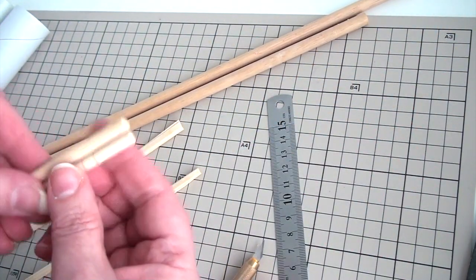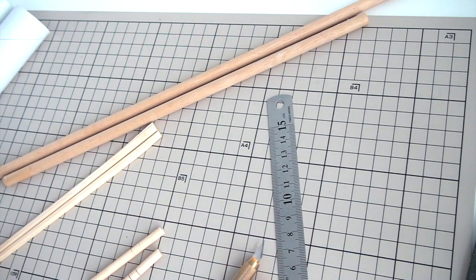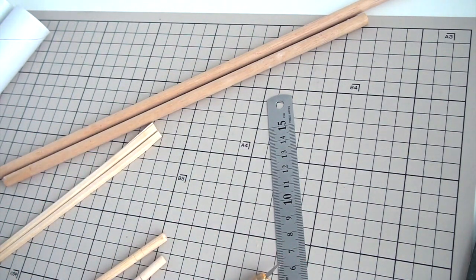Instead of the dowels a very long paper straw may also work, or you can roll up a sheet of paper very tightly. But it is probably not as stable as with dowels.